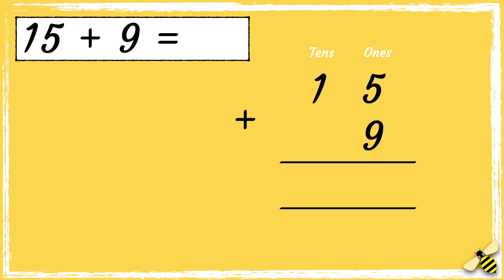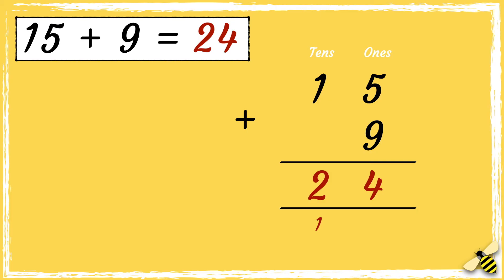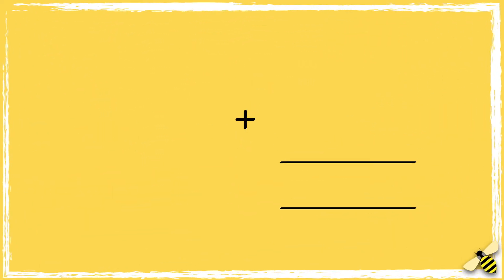So now our column addition is set up. Remember we start from the right hand side, so we'll start with the ones. Five add nine equals fourteen. We carry the ten below in the tens column. Now we need to add the digits in the tens column, not forgetting the ten we carried over. One add one equals two, so we have two tens and four ones, so the answer is 24.